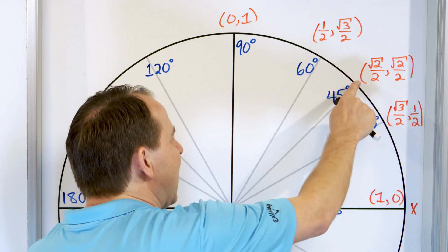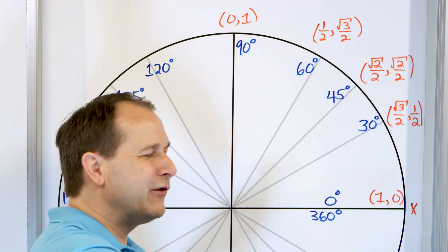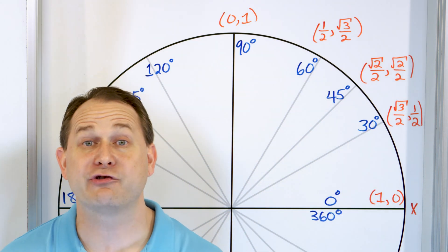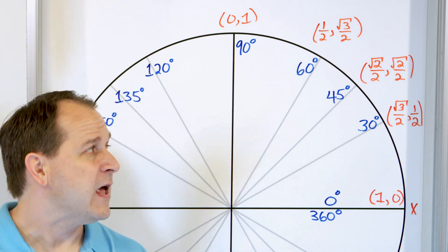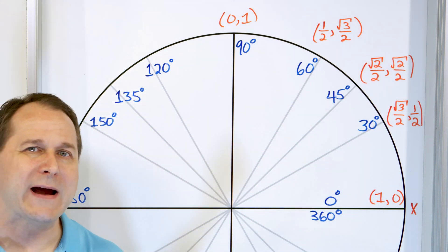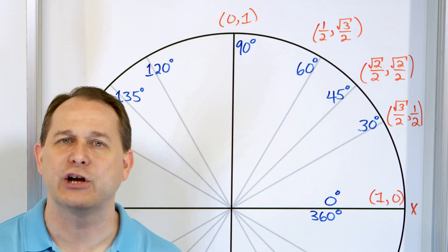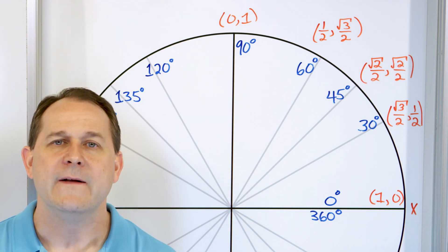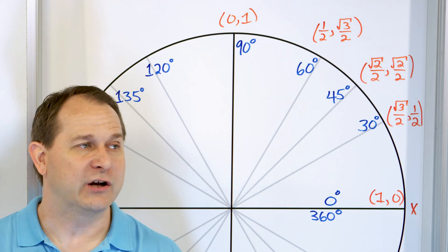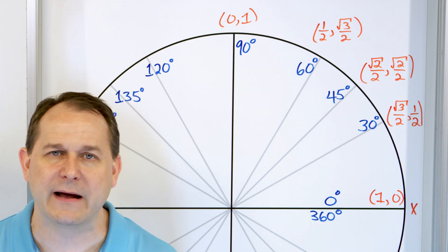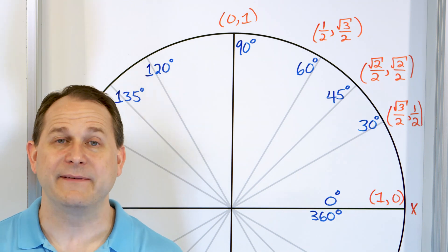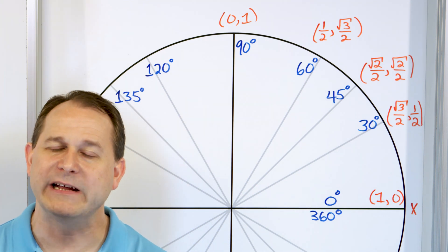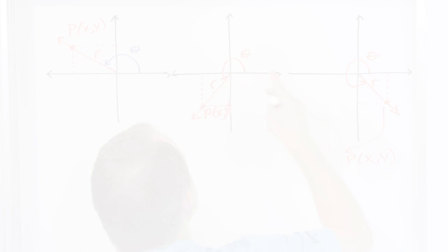That triangle was kind of a first-quadrant triangle, so everything was positive. But now we're taking the training wheels off and we're going all the way around. Sometimes the sine and the cosine are not positive anymore. The tangent, the cotangent, the secant — sometimes they're not positive. Sometimes they even have crazier values than that. We're going to get into that kind of thing as we move along.